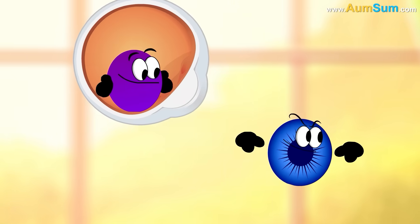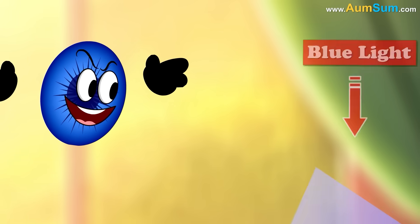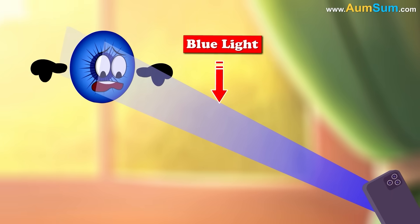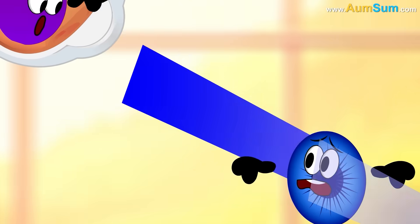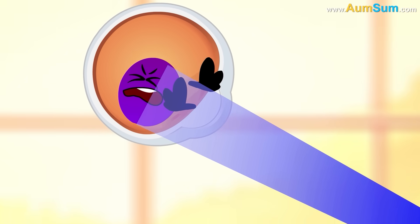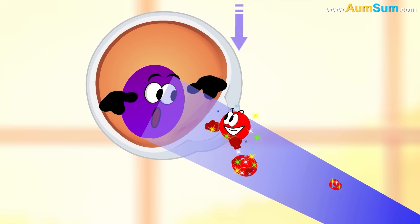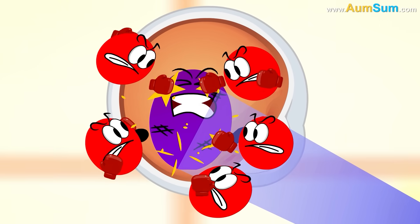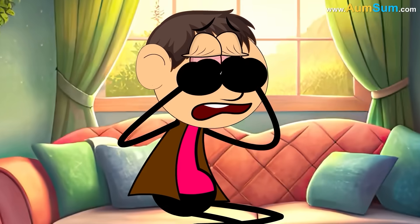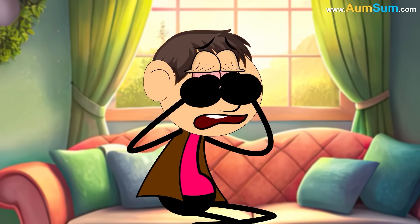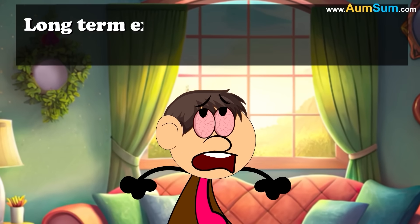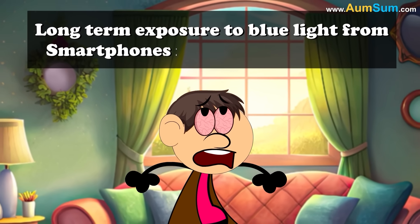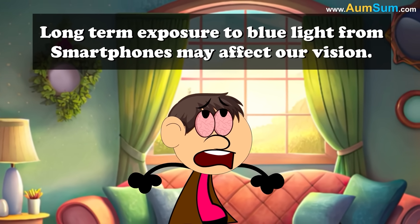But our eyes are not good at absorbing blue light emitted by smartphones. Hence, the blue light hits the retina and produces toxic substances, which slowly begin to damage the retina. Hence, long-term exposure to blue light from smartphones may affect our vision.